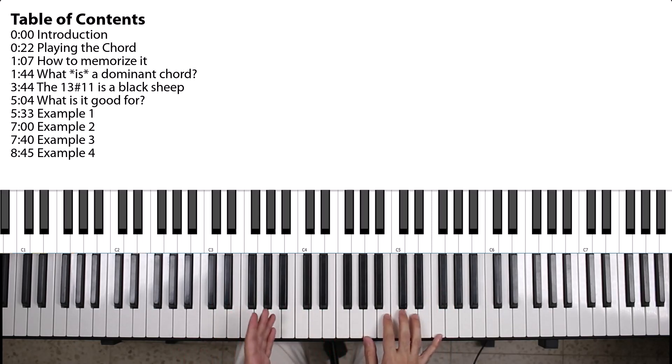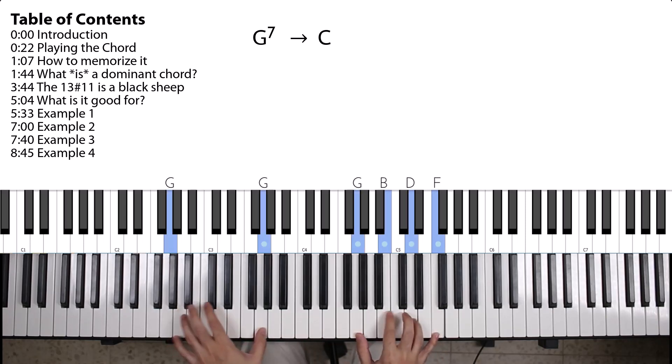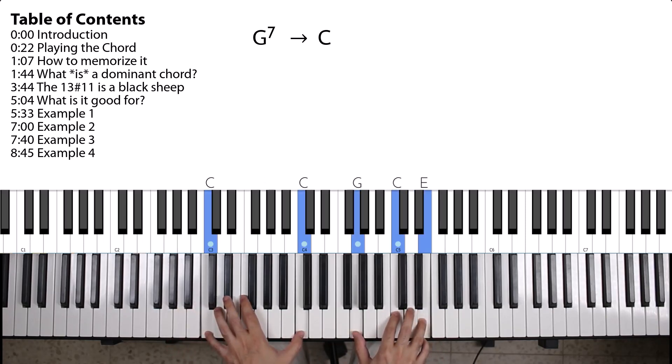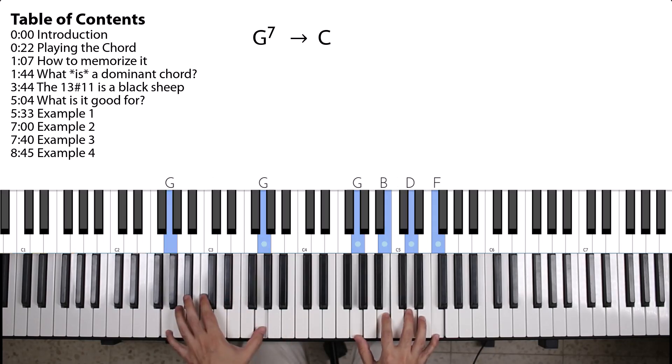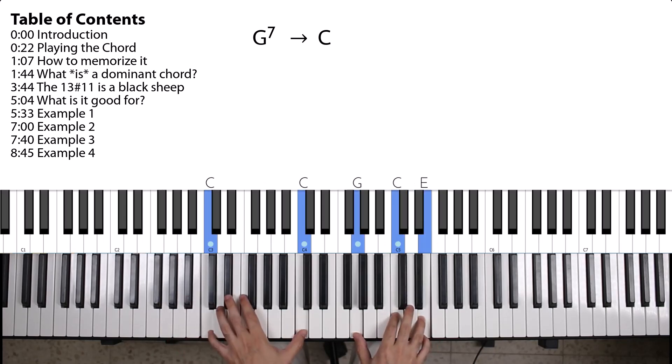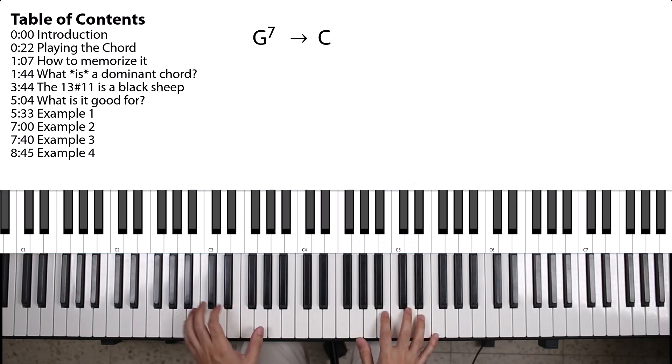Basically, the idea is that a dominant chord resolves naturally to either the major or the minor chord that is a perfect 4th above it. So for a G, the chord that is a perfect 4th above it is a C. So I can play a G dominant 7, resolving to a C major, or even a C minor.